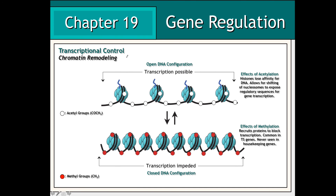Another method by which genes can be regulated through transcriptional control is through a process known as chromatin remodeling. Chromatin remodeling is usually associated with the addition of either acetyl or methyl groups to the DNA. With regards to acetylation of the DNA molecule, this process tends to lessen the attraction of the DNA with histone protein complexes. Therefore, the DNA becomes more loosely packed, exposing various regulatory regions such as enhancers, which tend to promote gene transcription.